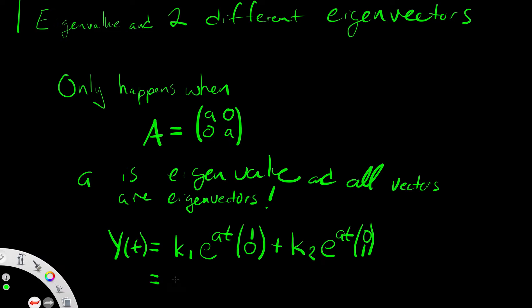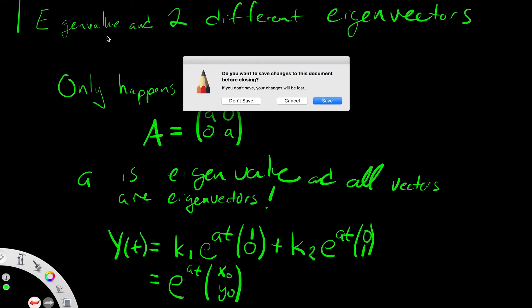Or, alternatively, we just write e to the AT times the vector which gives the initial condition. Then when you plug in t equals 0, you'll have exactly your initial condition. So that's what happens when we have one eigenvalue and two different eigenvectors.